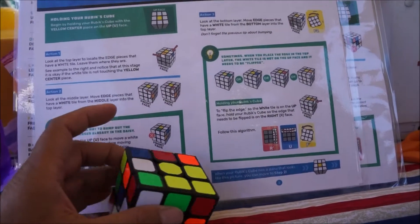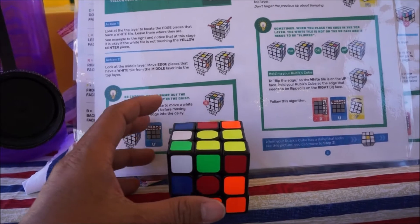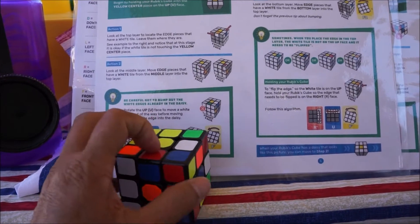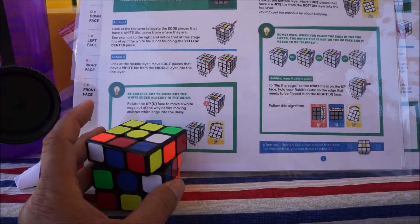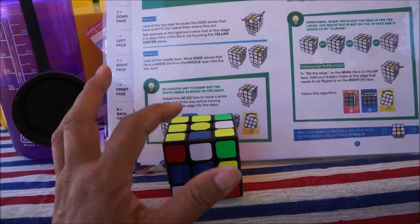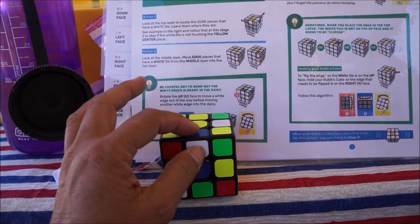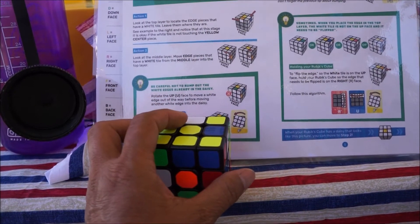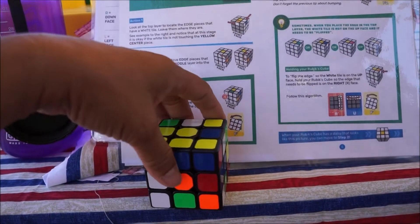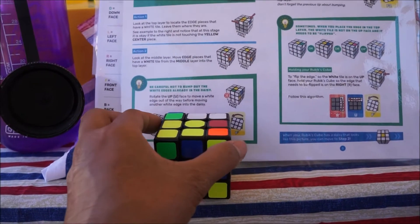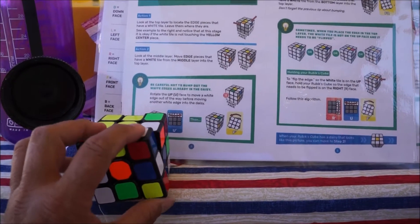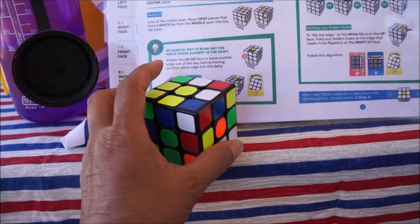So you work to get the whites in these four spots. And you might find, for instance, that the white, you can get the white in the right spot, but it is around the corner. So in order to solve that, what they say is you turn it forward, you turn the top around, and then you turn it over. So you see what happened there? So that's how you got that one.